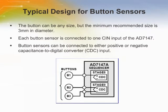This figure shows the typical design for button sensors. The button size must be equal to or greater than three millimeters in diameter. Each button sensor is connected to one CIN input of the AD7147. Button sensors can be connected to either positive or negative CDC inputs. Two buttons can be used on the same differential stage with one connected to the positive CDC input and the other to the negative. Note that buttons connected differentially cannot be activated together because one cancels out the other.